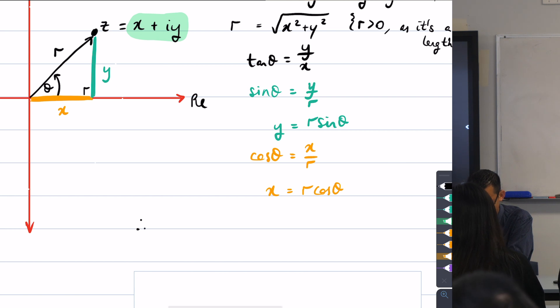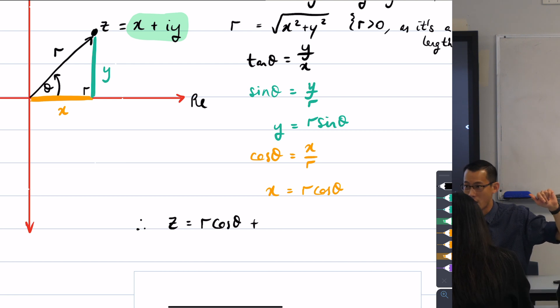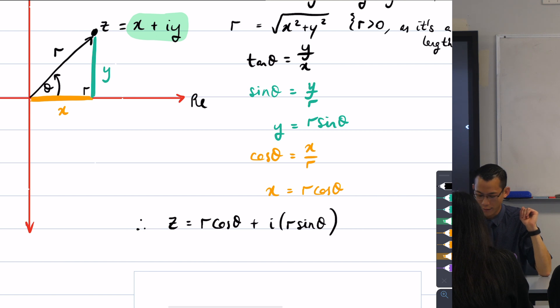I can say instead of writing z equals x plus i y, I can write r cos theta plus i y. Except I know what i y is as well. It's going to be i times r sine theta. That's what I get from this equation in here. Does that make sense? Just a teeny bit more tidying up. I can clearly factorize and take out a factor of r. And so that leaves me with this guy.